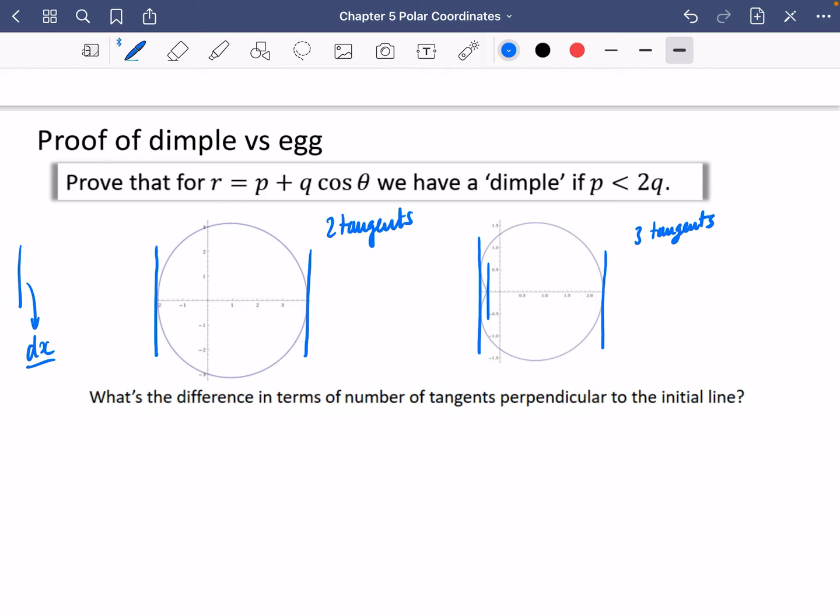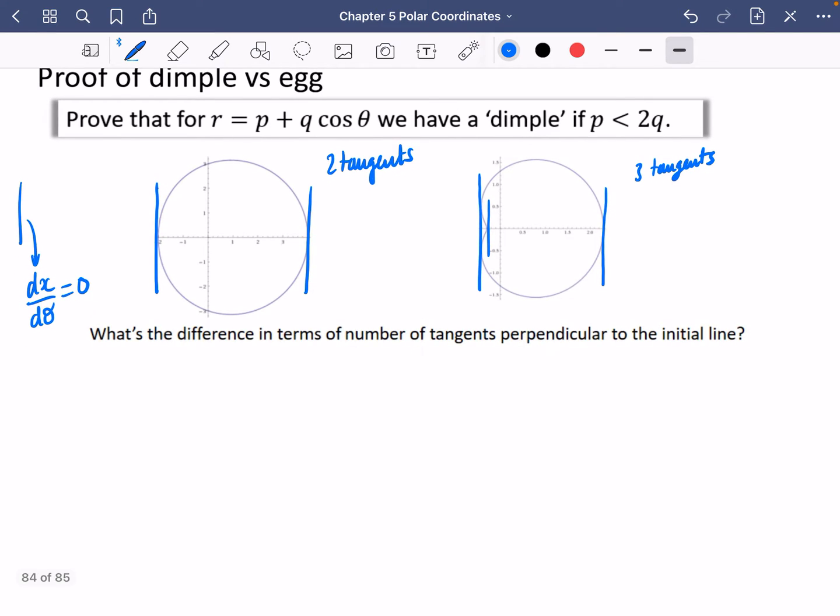Now, for vertical tangents, we know that dx/dθ is equal to zero. So we're actually just going to start working out what dx/dθ is. So we know that x is equal to r cos θ. So x is equal to r, which is p plus q cos θ multiplied by cos θ. So it's going to be p cos θ plus q cos squared θ.